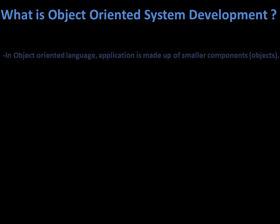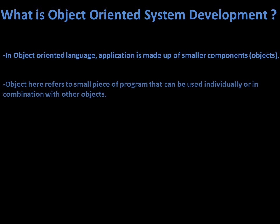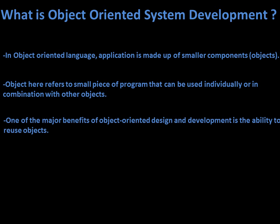What is OOSD? It is an application made up of smaller components. An object here refers to a small piece of program that can be used individually or in combination with other objects. One of the major benefits of OOSD is the ability to reuse the object.